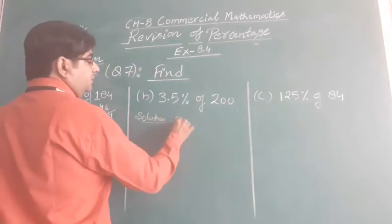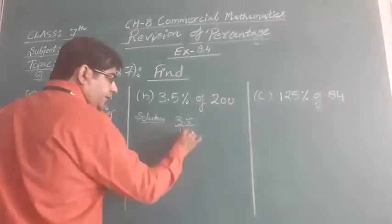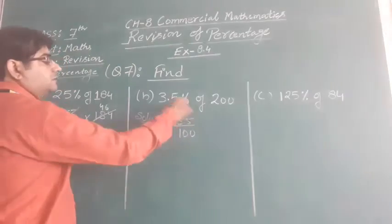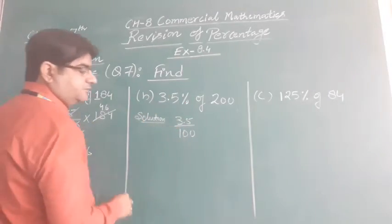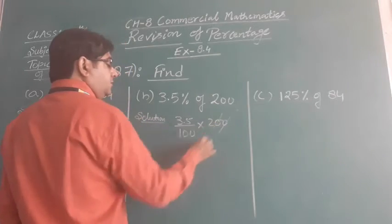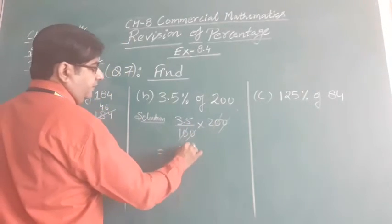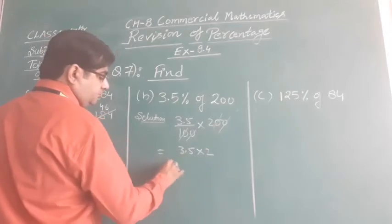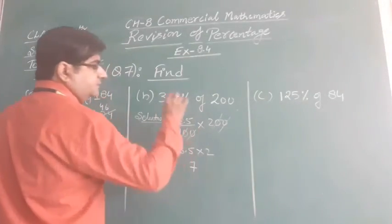So 3.5 upon 100, because we remove this percent sign and put 100 into 200. All zeros are cancelled and we get 3.5 divided by 2. So 3.5 into 2 is 7.